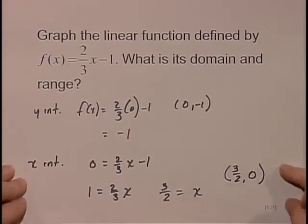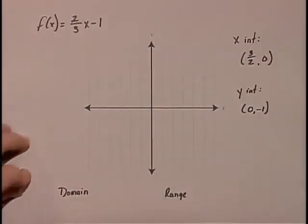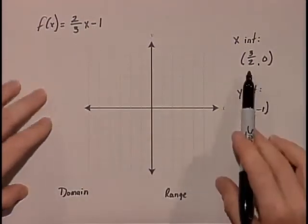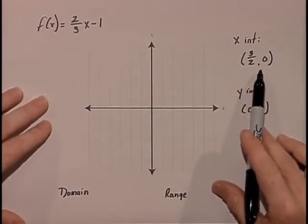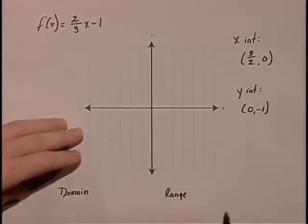We now have 2 points so we can graph our function. We have our original function f(x) = (2/3)x - 1. Our x-intercept at (3/2, 0), our y-intercept at (0, -1). Let's place those on our graph.